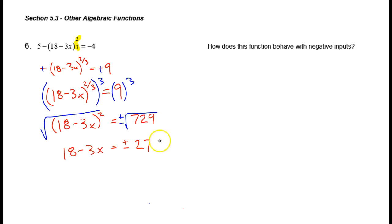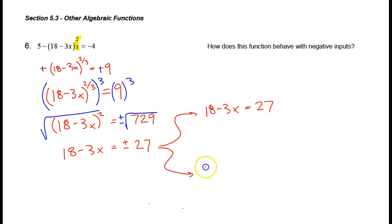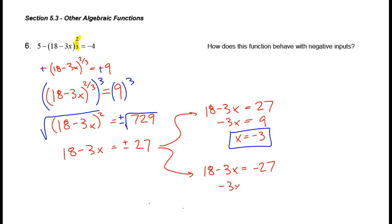So it looks like we have two different equations to solve. Let's take a look at each of those. I'm going to have 18 minus 3x equals 27, and then 18 minus 3x equals negative 27. Solving those quickly gives us x equals negative 3 or x equals 15. That's our solution to this equation.